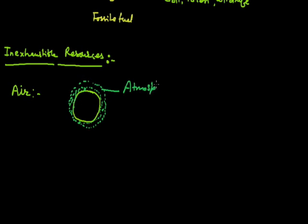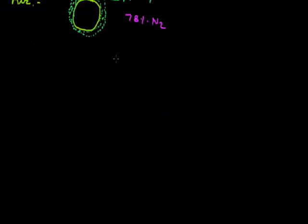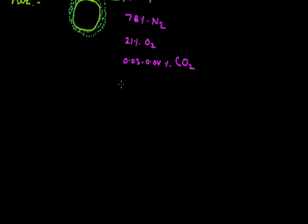Atmosphere is the region where the air molecules are present. The composition of the atmosphere contains 78% nitrogen, approximately 21% oxygen, 0.03 to 0.04% carbon dioxide, and inert gases in small trace amounts.